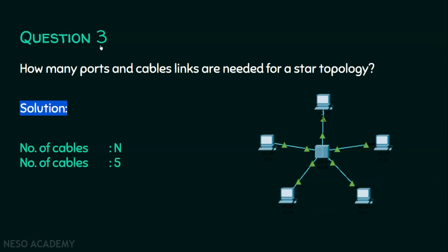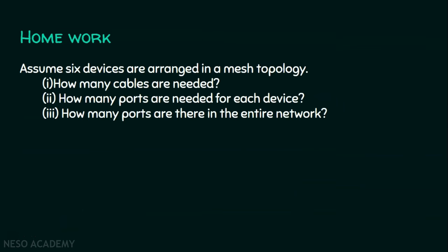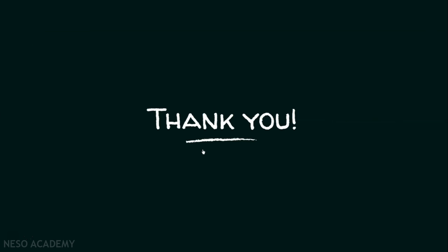The answer to question three is: if there are n nodes, we need n cables — in this case n equals five, so we need five cables. The number of ports equals 2 into n, where n equals five, so 2 into 5 equals ten ports. These ten ports include the ports in the n devices as well as the ports in the intermediary central device. There is also a homework problem: assume six devices are arranged in a mesh topology — find how many cables are needed, how many ports are needed per device, and how many ports are in the entire network. Derive a formula and post your answers in the comments. I hope this session was informative — thank you for watching.